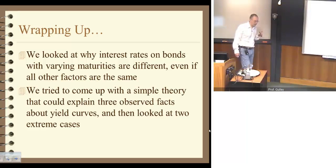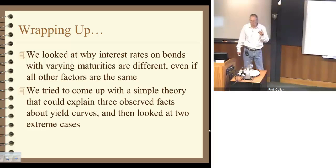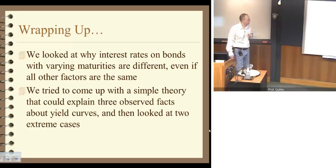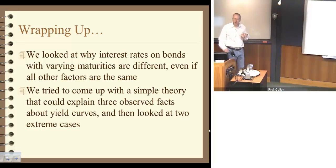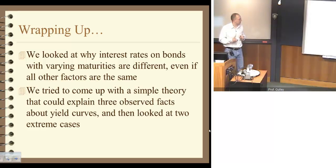In this short video segment, we tried to look at why, holding all other factors constant except maturity, bonds with different maturities have varying interest rates. We came up with a simple theory to explain three observed facts, and then looked at the two extreme cases: the segmented market hypothesis and the expectations hypothesis.